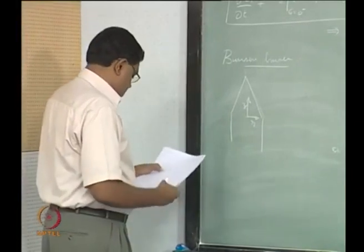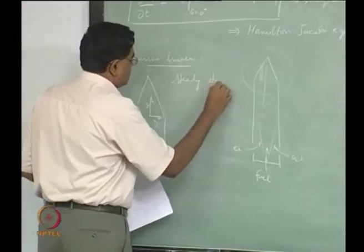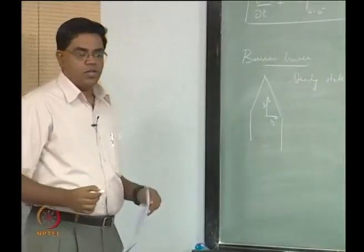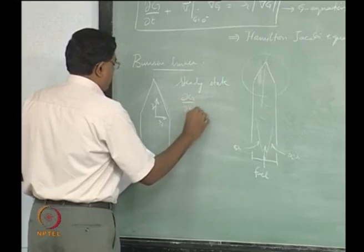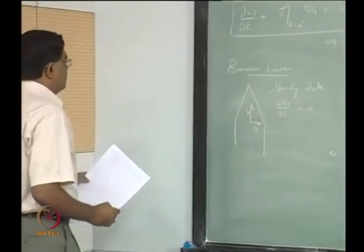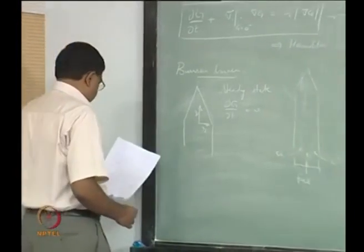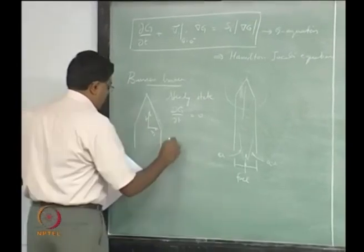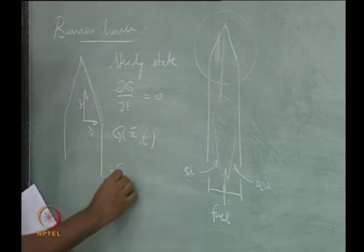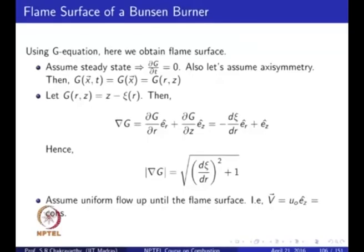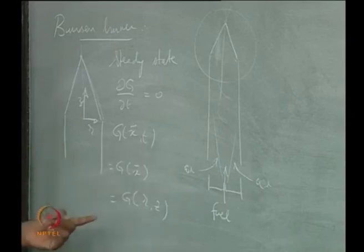We aim for the steady state. Many times when you light a Bunsen burner the flame hardly shakes, so you have a very good steady-state situation in a laminar Bunsen burner. That means the unsteady term in the G equation goes to 0. Therefore, in the steady state, G of position vector x becomes G of x alone, which in our case is G of R and Z, because it is axisymmetric — it does not depend on the azimuthal angle theta, so it depends only on R and Z.